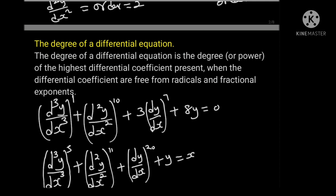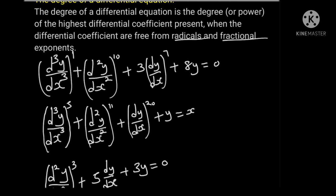Now let us define the degree of a differential equation. The degree of a differential equation is the degree or power of the highest differential coefficient present, when the differential coefficients are free from radicals and fractional exponents. So we need to remove all square root signs as well as fractions. To find the degree, first identify the highest differential coefficient, and second, ensure it is free from any radical or fractional exponent. For example: d cubed y over dx cubed plus (d squared y over dx squared) to the power 10 plus 3(dy over dx) to the power 7 plus 8y equals to 0.